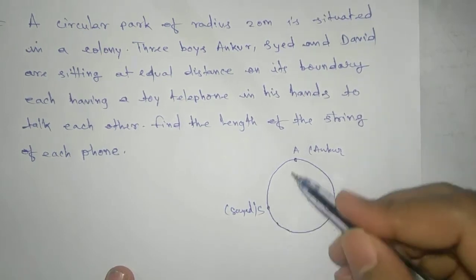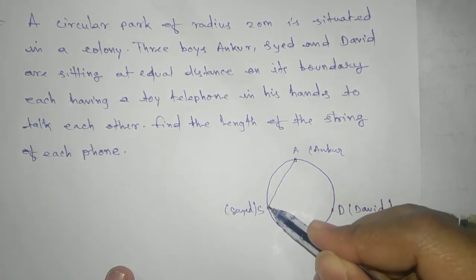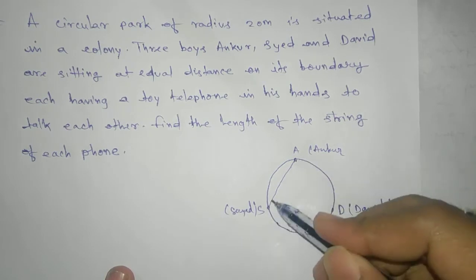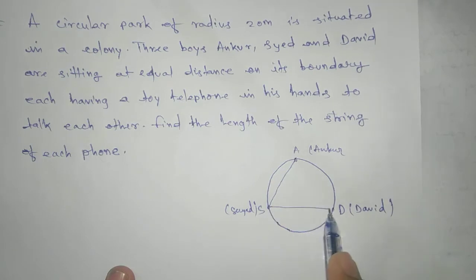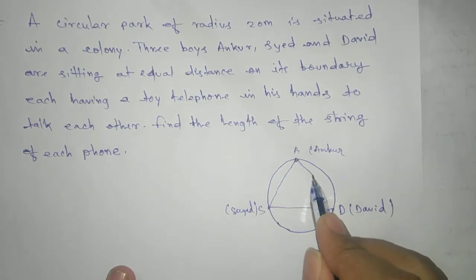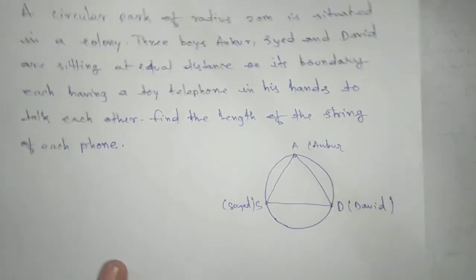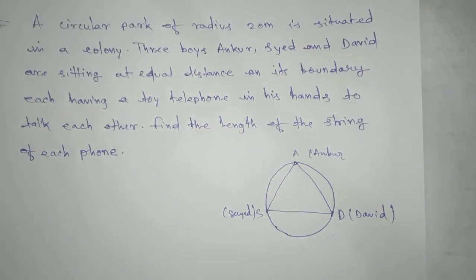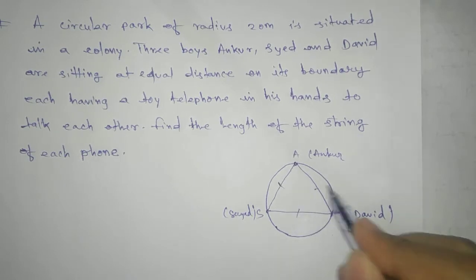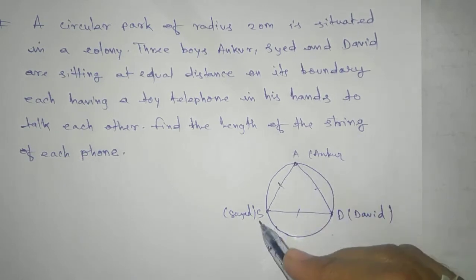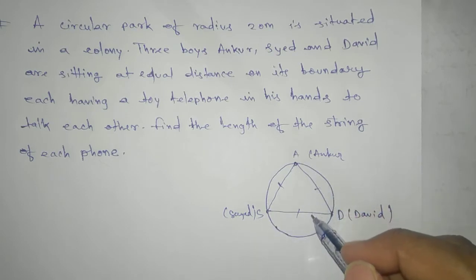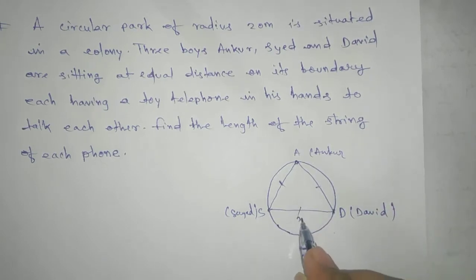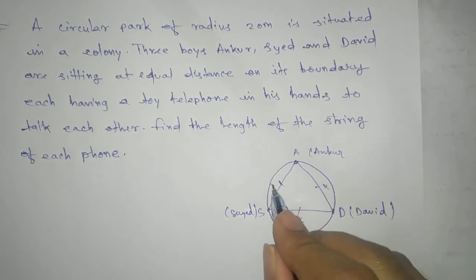Now we join them. Why? Because they are at equal distance. So we need to find the string — SD and AD. Since they are sitting at equal distance, if we take triangle ASD, then this is an equilateral triangle. Let us take each side as X.